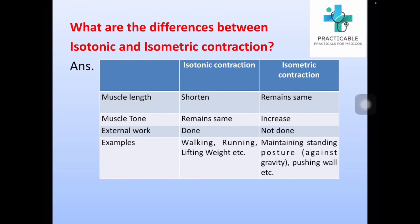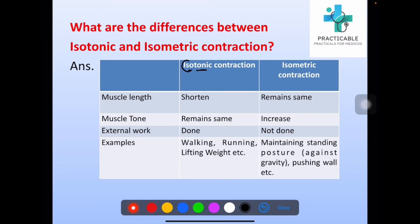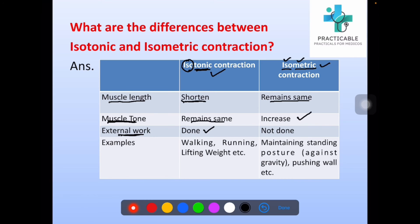What are the differences between isotonic and isometric contraction? See the words carefully — isotonic: 'iso' means same, 'tonic' means tone is same. Isometric: 'iso' means same, 'metric' means muscle length remains same. So muscle length remains same in isometric contraction and it is shortened in isotonic contraction. Muscle tone remains same in isotonic contraction and it increases in isometric contraction.